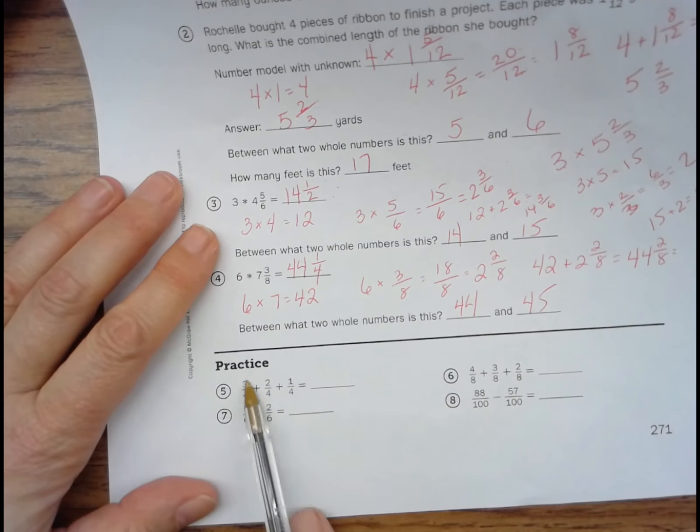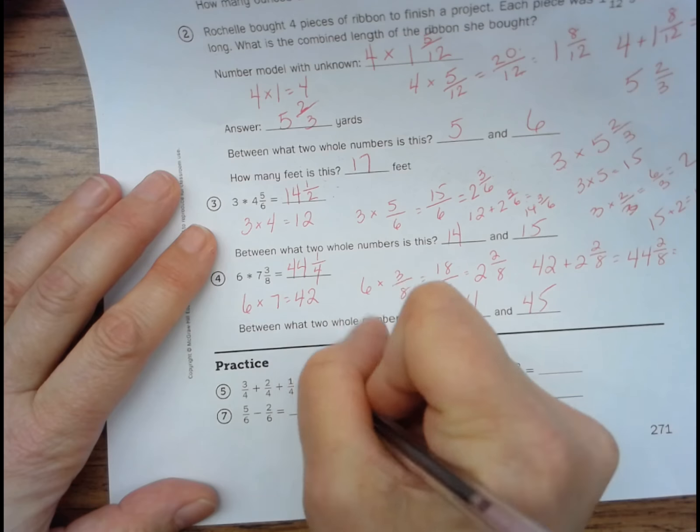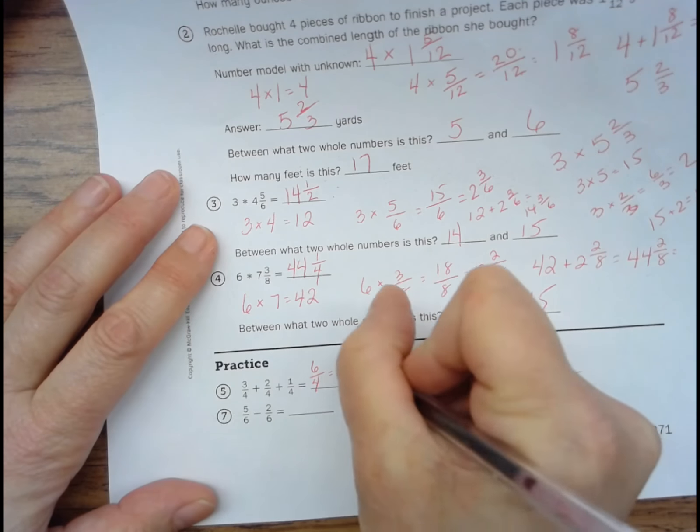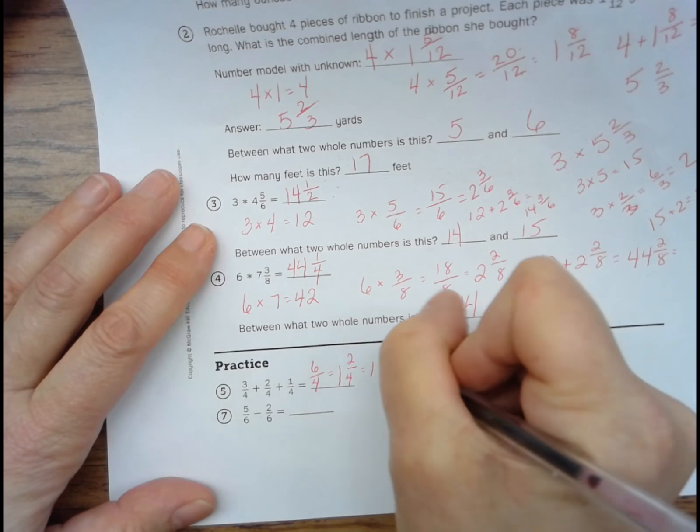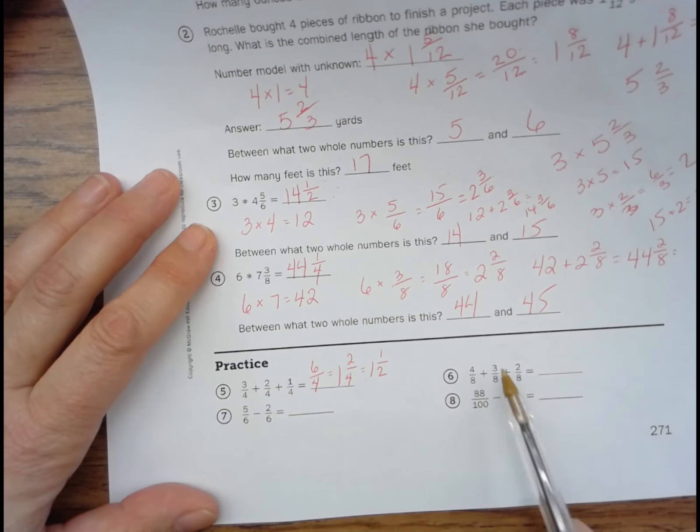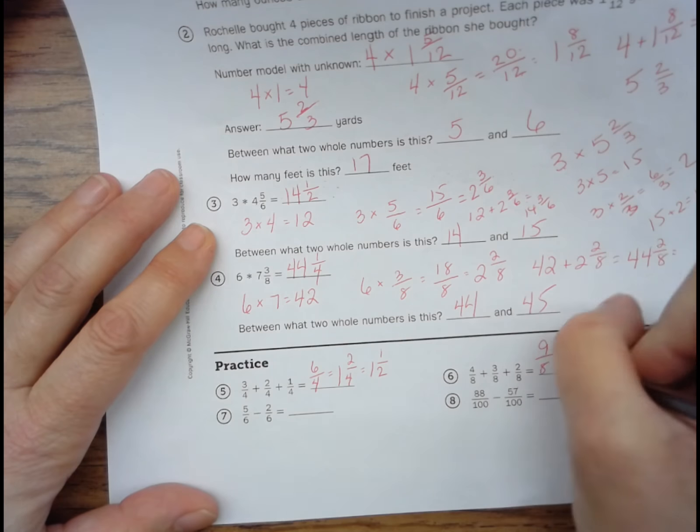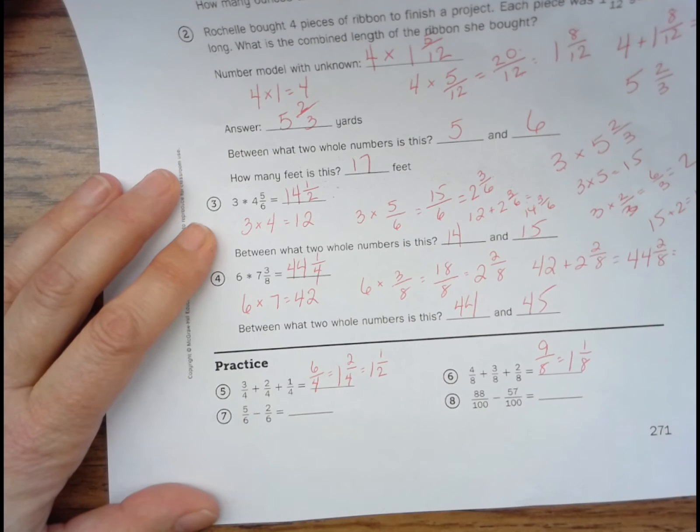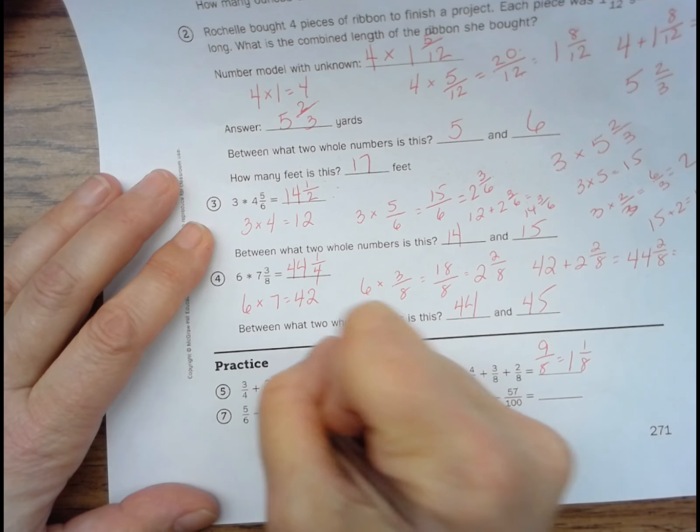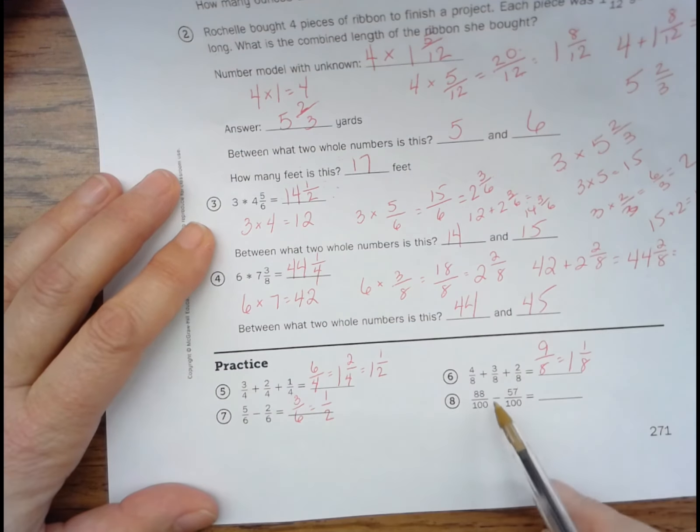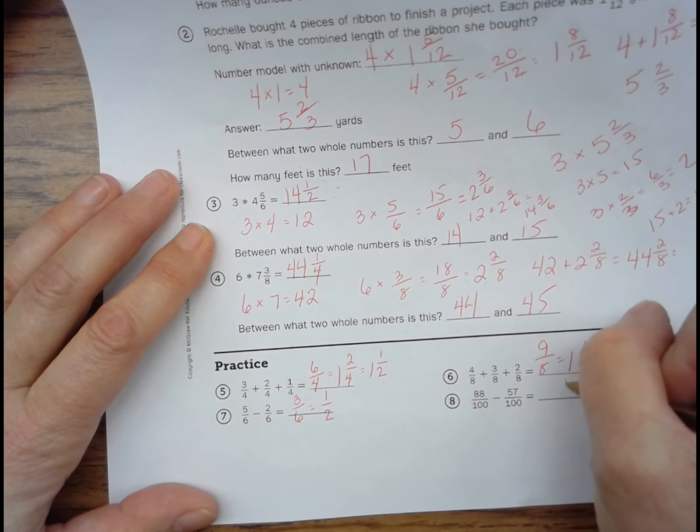And then for the practice, three-fourths plus two-fourths plus one-fourth. Three, five, six is six-fourths. And we can simplify that to one and two-fourths, which we can simplify further to one and a half. Four-eighths plus three-eighths plus two-eighths. Four and three is seven. Plus two is nine. And we can simplify that to one and one-eighth. Five-sixths minus two-sixths equals three-sixths, which equals one-half. And eighty-eight hundredths minus fifty-seven-hundredths. Eight minus seven is one. Eight minus five is three. Thirty-one-hundredths.